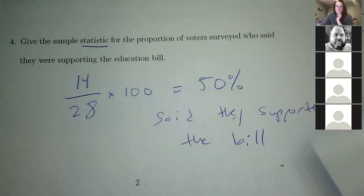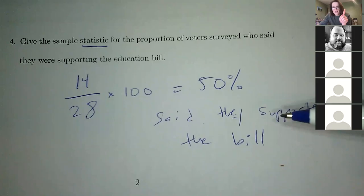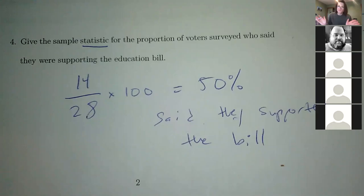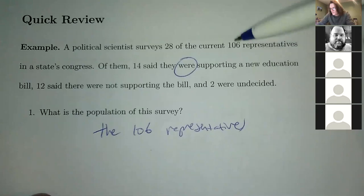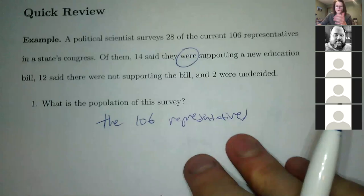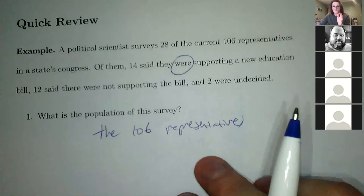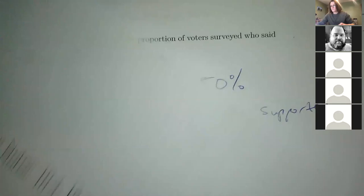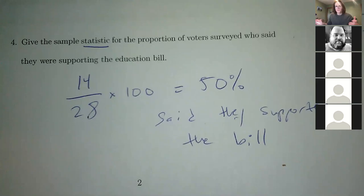Strictly speaking, this is only 50% of the sample. But if you take your sample correctly, the idea is that you can take this 50% and say, well, if I did ask everyone, it would still be around 50. Now that's not really true in general, especially with political things, because if these 106 are evenly split Democrat-Republican and the 28 are just one party, then your numbers are going to be skewed — your sample won't be representative of the population at large. That's the goal: to take a sample statistic and infer information about the population at large. Very difficult.